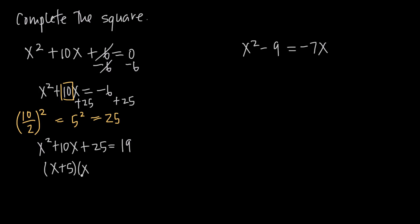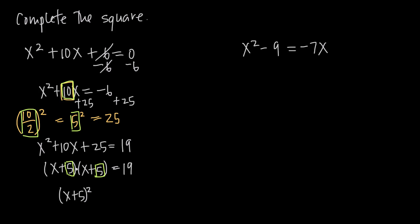So we get x plus 5 times x plus 5 equals 19. When completing the square correctly, you always get two identical factors — in this case x plus 5 twice. The factor 5 comes directly from 10 divided by 2. We can rewrite this as quantity x plus 5 squared equals 19, since we have two identical factors multiplied together.